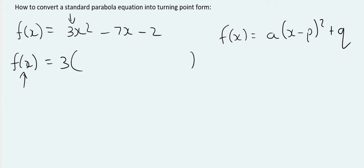So, you take it out like that, and then you have x squared minus 7 over 3x minus 2 over 3. See these ugly fractions we're getting? It's absolutely fine.